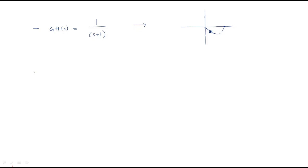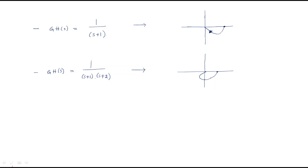The second plot has another finite pole added to the first, making it 1/((s+1)(s+2)). The polar plot changes accordingly — it starts from here, touches this point, and then ends at this point. The direction is like this: starting from here and ending here.